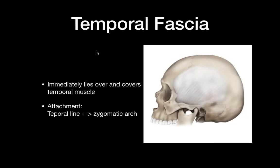The temporal fascia lies immediately over and covers the temporal muscle. It starts at the temporal line and then goes down and connects to the zygomatic arch. At the zygomatic arch, the temporal fascia divides into two layers — the outer layer and inner layer.